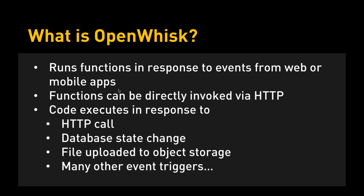Code can execute in response to a variety of events — it could be a plain vanilla direct HTTP call in a synchronous form, or it could be a database state change. For example, you inserted a new row in a database and you want to create a trigger. You upload a file to an object storage and that can trigger an OpenWhisk function where you can do anything you want with it. You can wire any external event as a trigger and create a very orchestrated workflow with external events. That is the programming model of OpenWhisk.